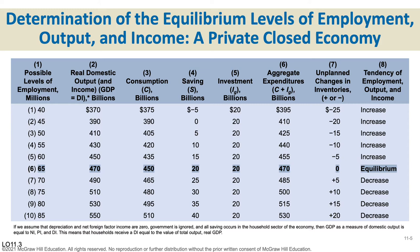Column six is aggregate expenditures — we add the spending together. Right now the only spending we have is consumption and gross investment. Aggregate expenditures just means add those two columns together: consumption is column three, investment is column five. So 375 plus 20 is 395, 390 plus 20 is 410, 405 plus 20 is 425. We're just adding columns three and five — consumption and investment — to get aggregate spending.